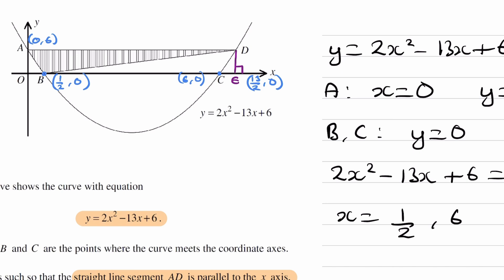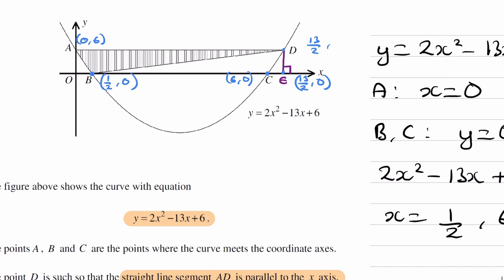And then point D would be also 13 over 2. The y-coordinate would be the same y-coordinate as point A, so it would be 6.